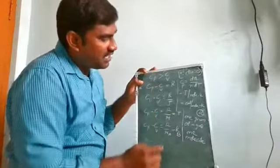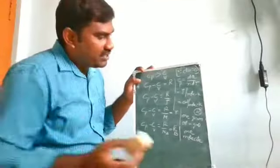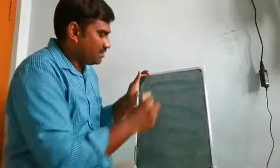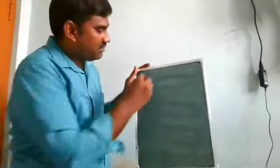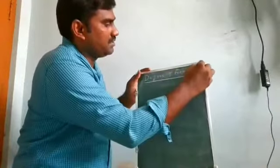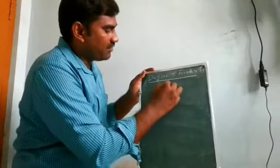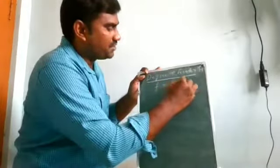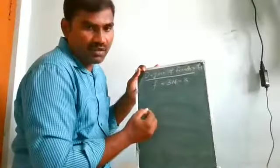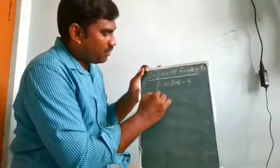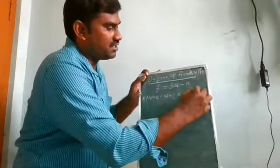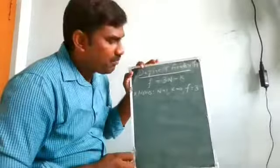The Cp-Cv relation in terms of R and degrees of freedom will now be discussed. By knowing degrees of freedom F, we can express Cp and Cv values, and the ratio Cp/Cv is called gamma. Degrees of freedom are calculated using F equals 3N minus K, where N is the number of atoms in a molecule and K is the number of constraints. For a monoatomic gas, N equals 1, K equals 0, so F equals 3 — three translational degrees of freedom.